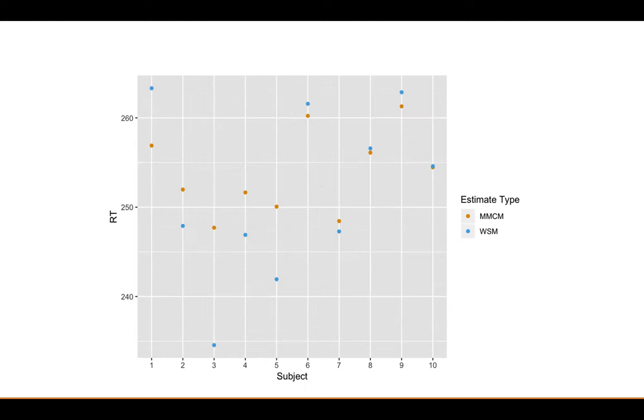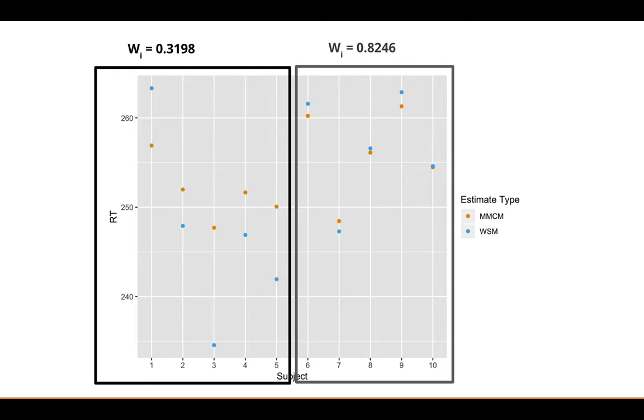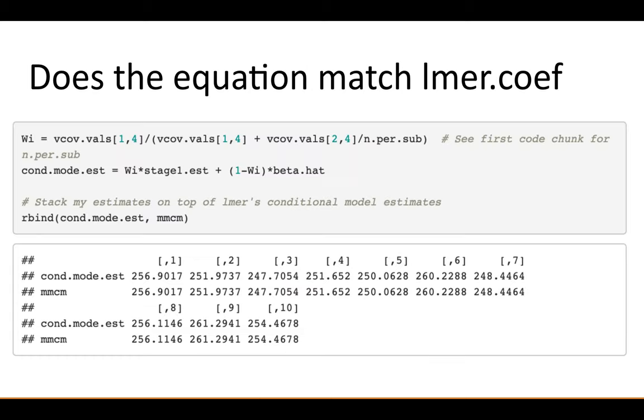So going back to this example, and again, this is the exact same data from last time, you'll see that the weight for these first five subjects—recall they had less data—the weight for them is 0.3198, and the weight for the last five subjects is 0.8246. So the thing you should always check is if you find an equation in a book, you need to make sure it actually is what's being implemented by your software. What I've done here is I've extracted those estimates that I wanted, and I've took that weighted average and compared, and they matched up. So that's always a relief.